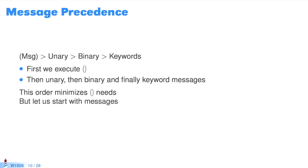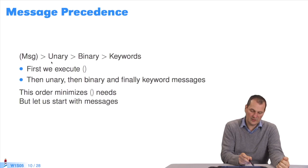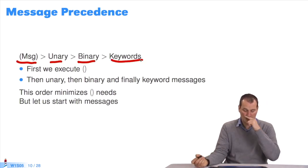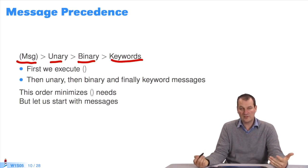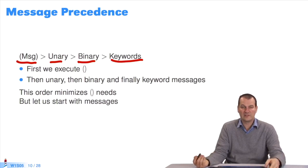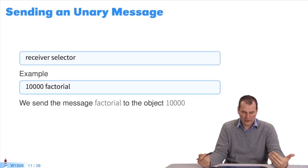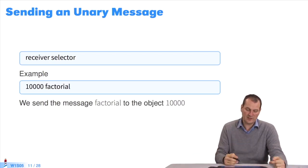There's a precedence between messages. The system will execute, in priority, the parentheses, then the unary, binary, and keyword messages. Why? To avoid writing too many parentheses. We could have had a system with parentheses all over the place, but the code would be illegible. I'll go back over each type of message in a simple way.